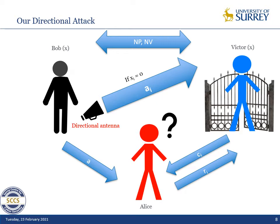But for some of the rounds where Xi is equal to 0, Bob will send his own response overwriting Alice's response through a directional antenna, and this response will be Ai. As we saw before, that will be a valid response for these rounds.